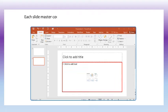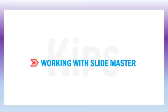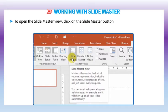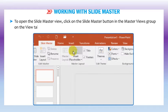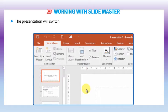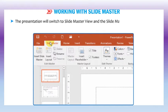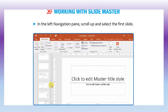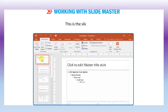Each slide master contains one or more standard or custom sets of layouts. To open the slide master view, click on the slide master button in the master views group on the view tab. The presentation will switch to slide master view and the slide master tab will be selected on the ribbon. In the left navigation pane, scroll up and select the first slide. This is the slide master.